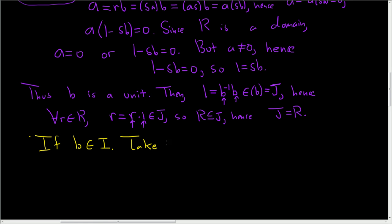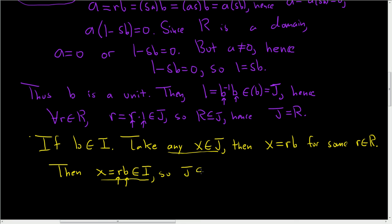So take any x in J. Then we can write x as rb for some r in R. Then x is equal to rb. Now r is in our ring R. b is in I. Because I is an ideal, that means x is in I. So we took an x in J and we showed that x was in I. So J is a subset of I. But we showed at the beginning, we assumed that I was a subset of J. Hence, J is equal to I.